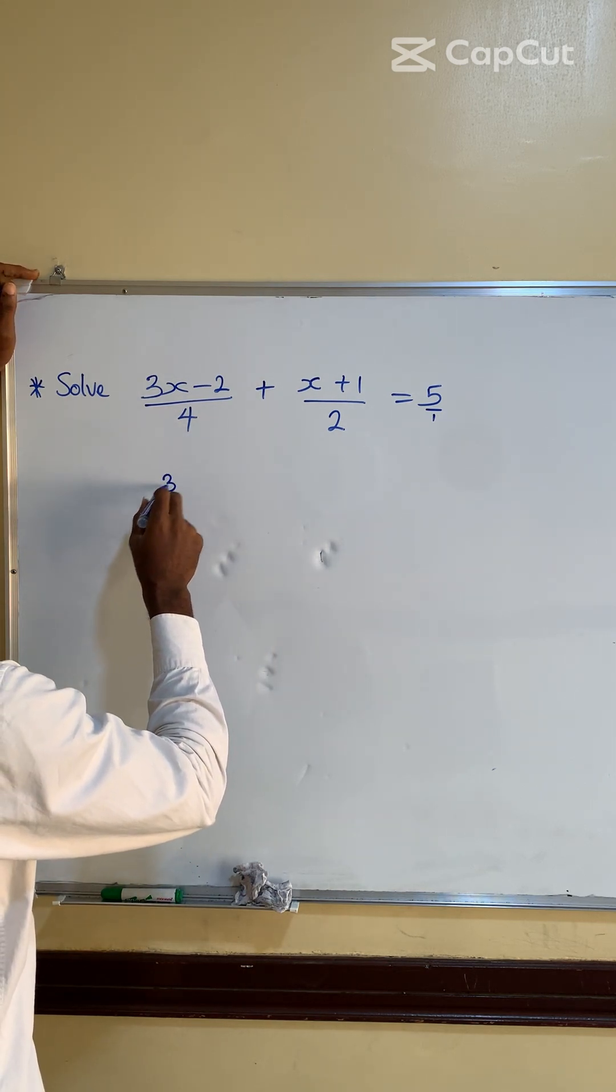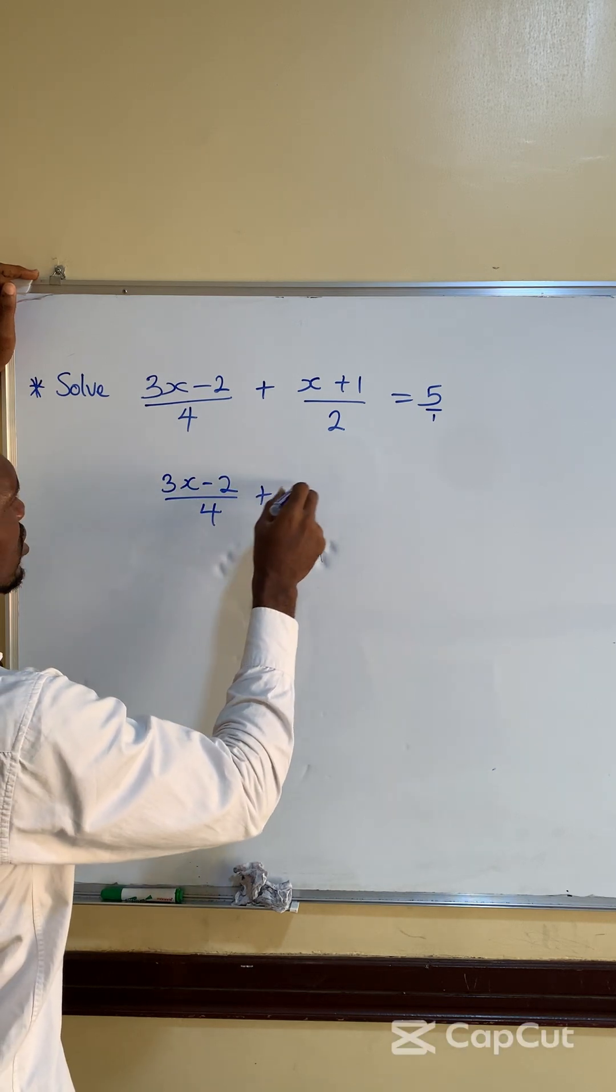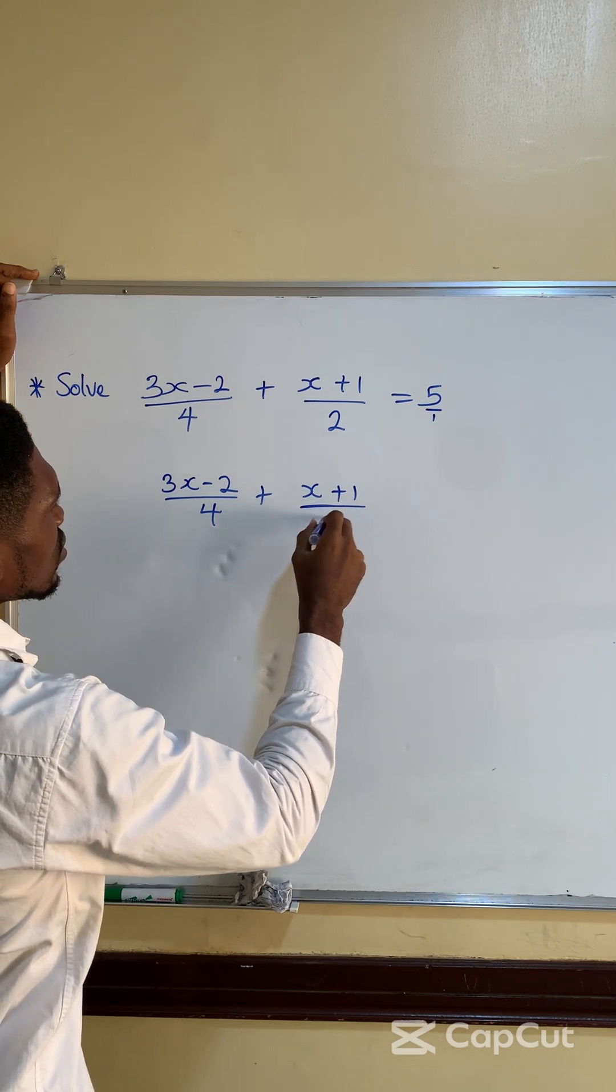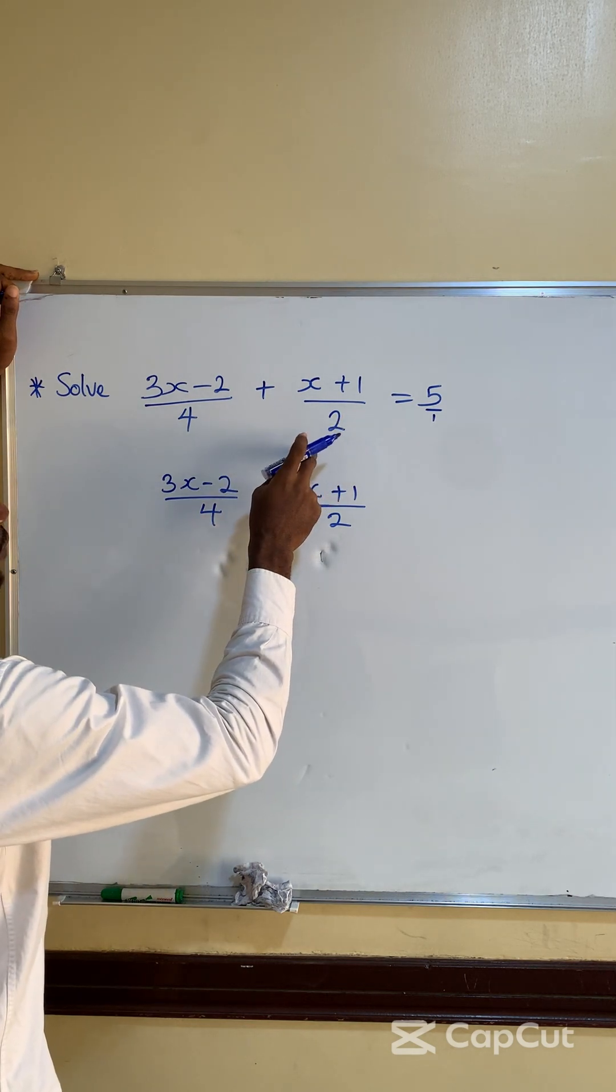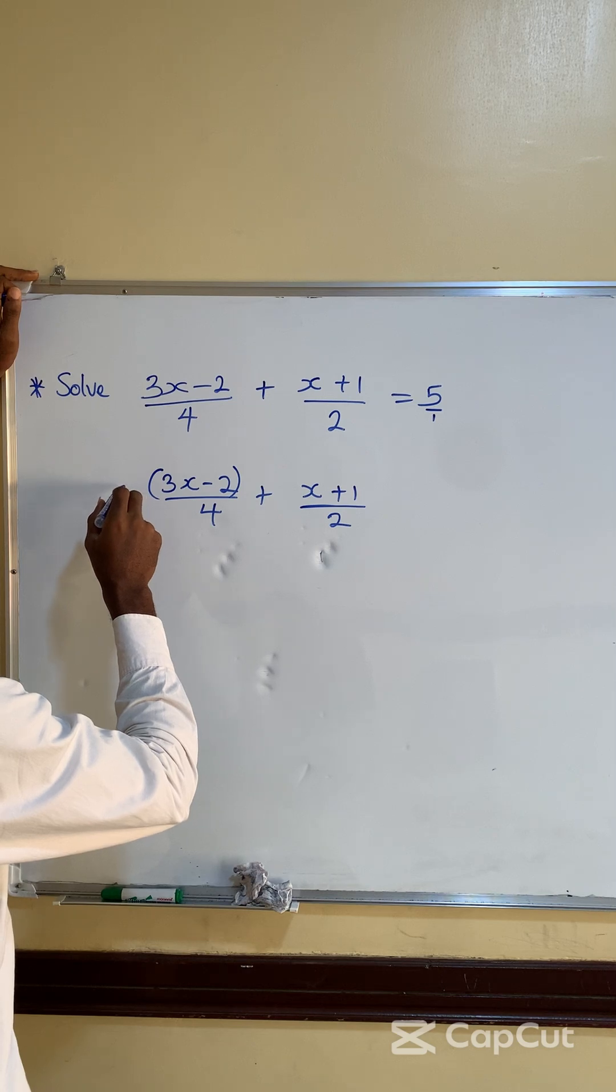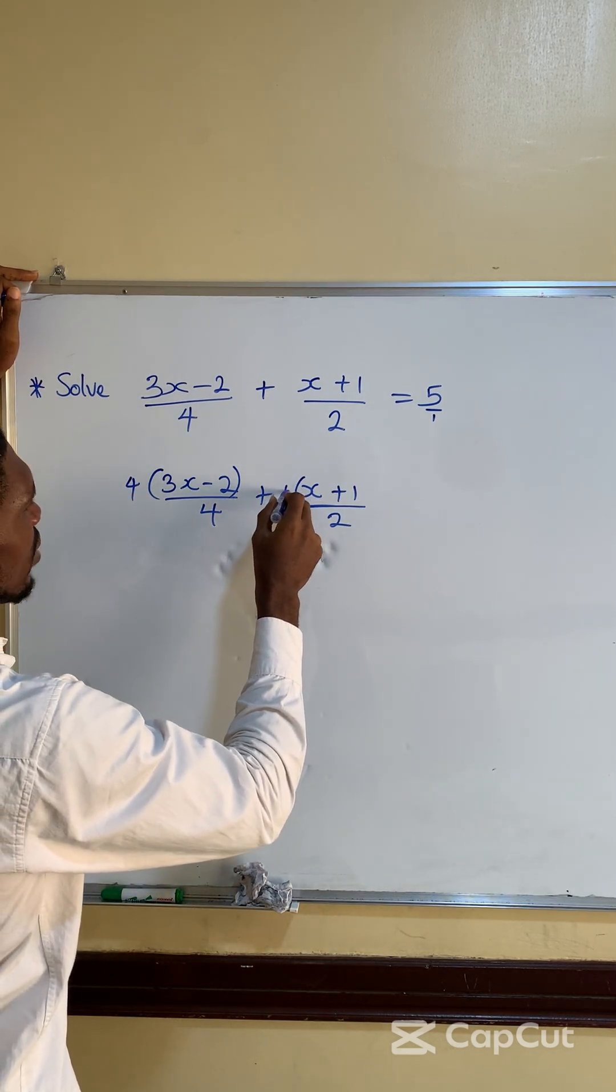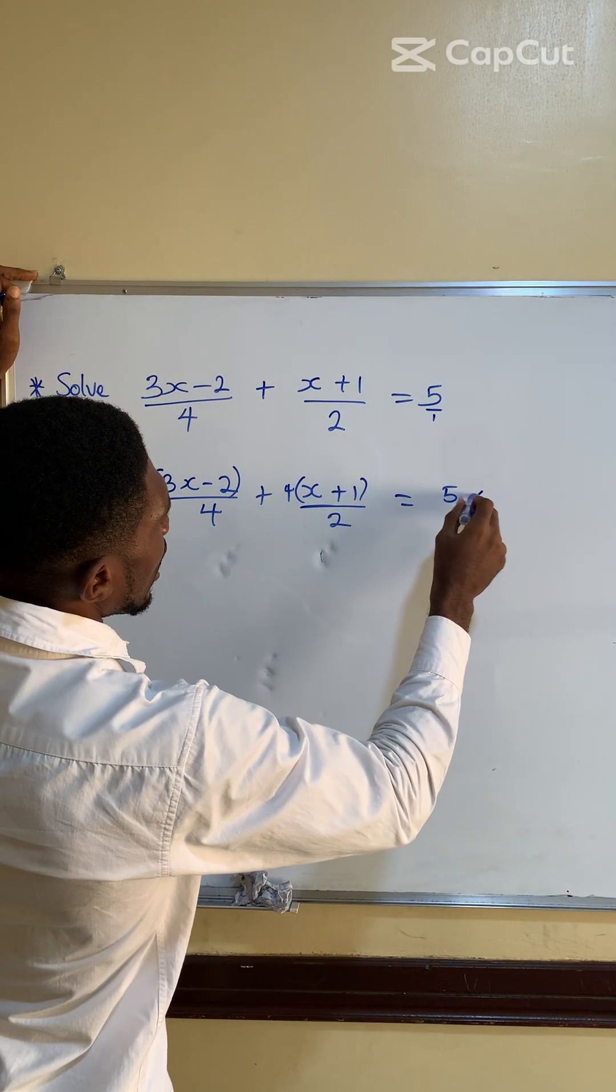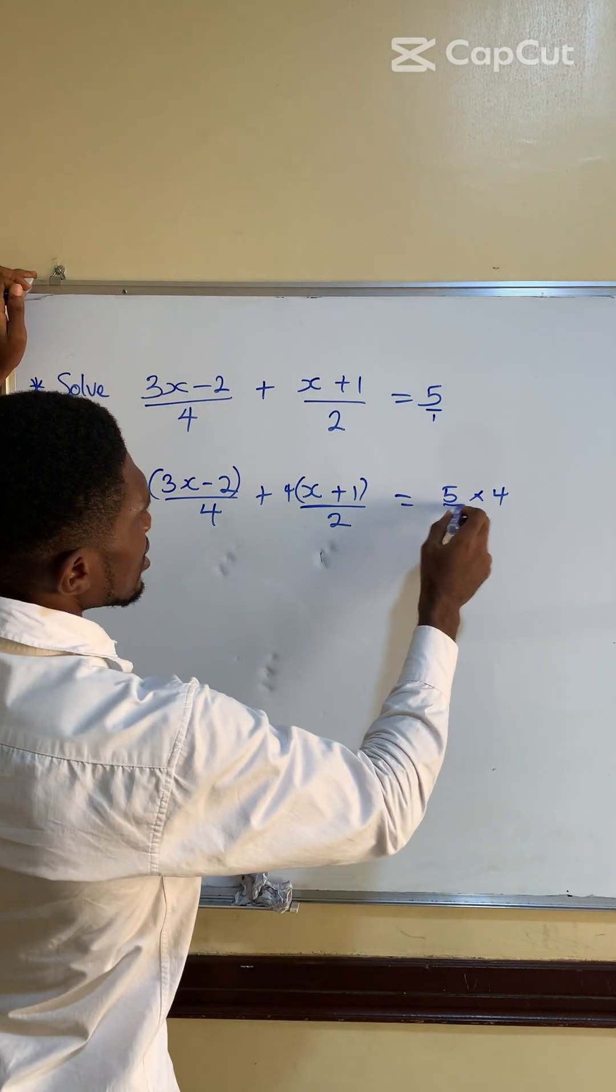So you see, 3x minus 2 over 4 plus x plus 1 over 2. But remember, the LCM of 4 and 2 is 4. So you multiply both sides by 4. Multiply this 2 by 4, and then we'll have 5 times 4 over as well. You can say this over 1.